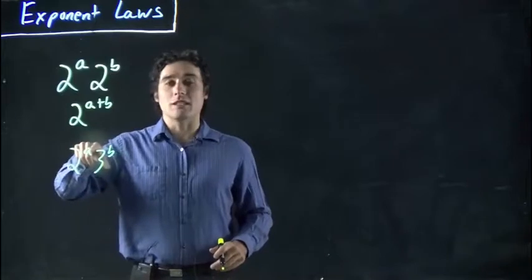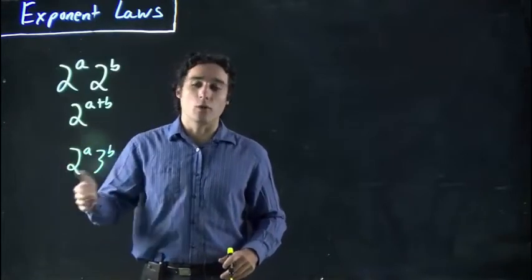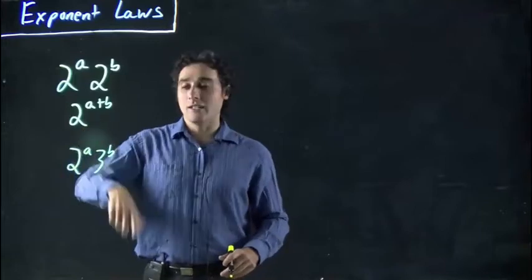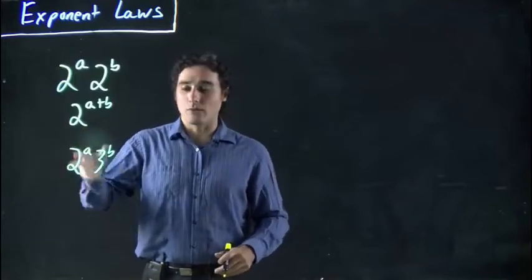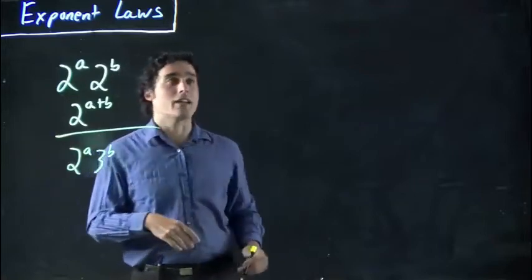Of course, if you knew what these numbers were, you could figure out what that is. Like if this was 2 squared, it'd be 4. If this was 3 squared, it'd be 9. And then it would be 9 times 4, or 36. But right now, we're stuck. We'd be done. We'd call that a day.